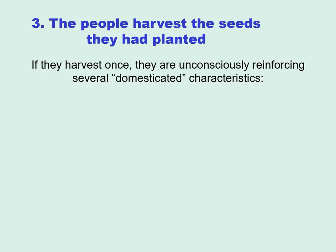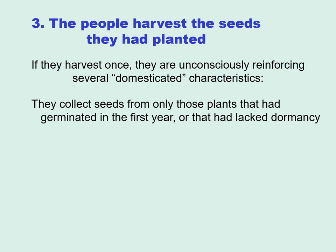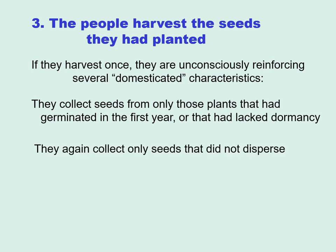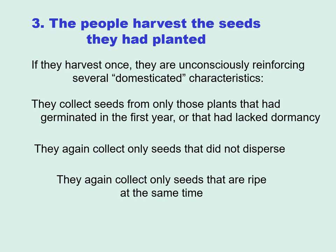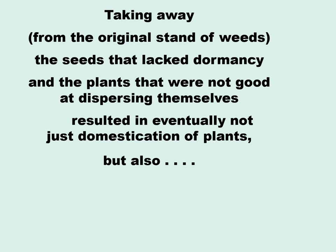If you harvest the seeds you had planted, again you may be unconsciously reinforcing several domesticated characteristics. If you harvest only once and collect seeds only from those plants that germinated in that first year, you are collecting only seeds that lack dormancy. And again, you're collecting seeds that did not disperse themselves very well, and only seeds that are ripe at the same time — without that variability in ripening times. Interestingly, by taking away this part of the gene pool — seeds lacking dormancy and seeds not good at dispersing themselves — you are not only potentially ending up with more domesticated plants, but you're creating weedier weeds back at the original stand.